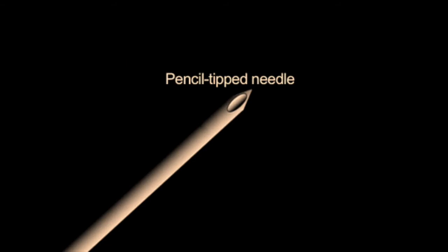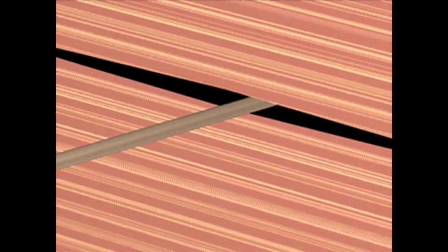Either use a pencil tip needle or assure that the bevel of the needle is in the sagittal plane so as to spread rather than cut the fibers of the dural sac. These fibers run parallel to the spinal axis. The use of this needle position should theoretically decrease the leakage of cerebrospinal fluid.